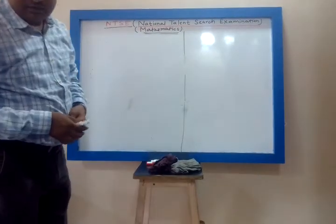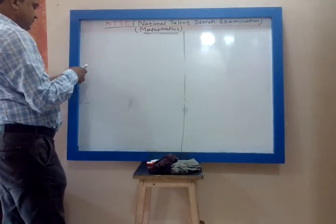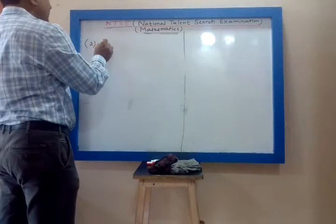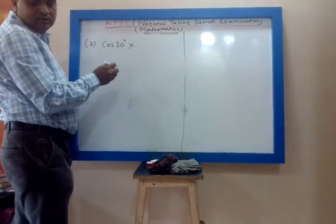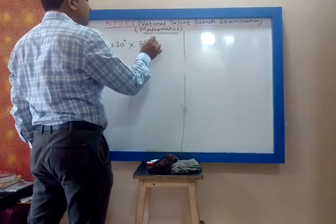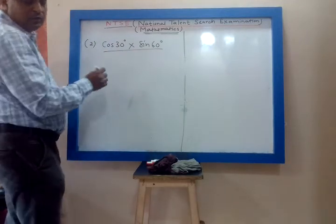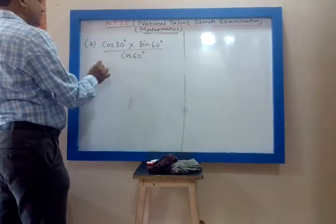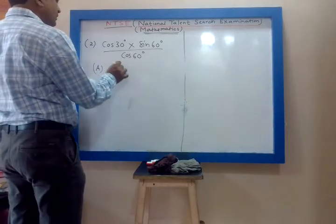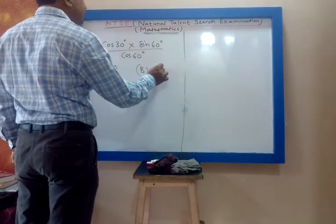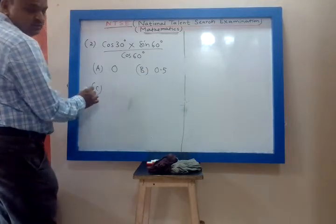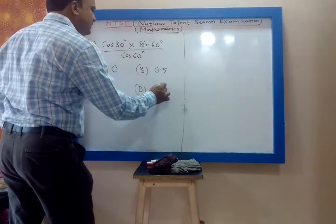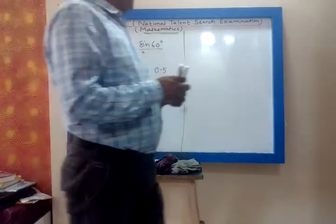Now let us see the second question: cos 30 degree into sin 60 degree into sin 60 degree upon cos 60 degree. The options are: A is 0, B is 0.5, C is 1, and D is 1.5.